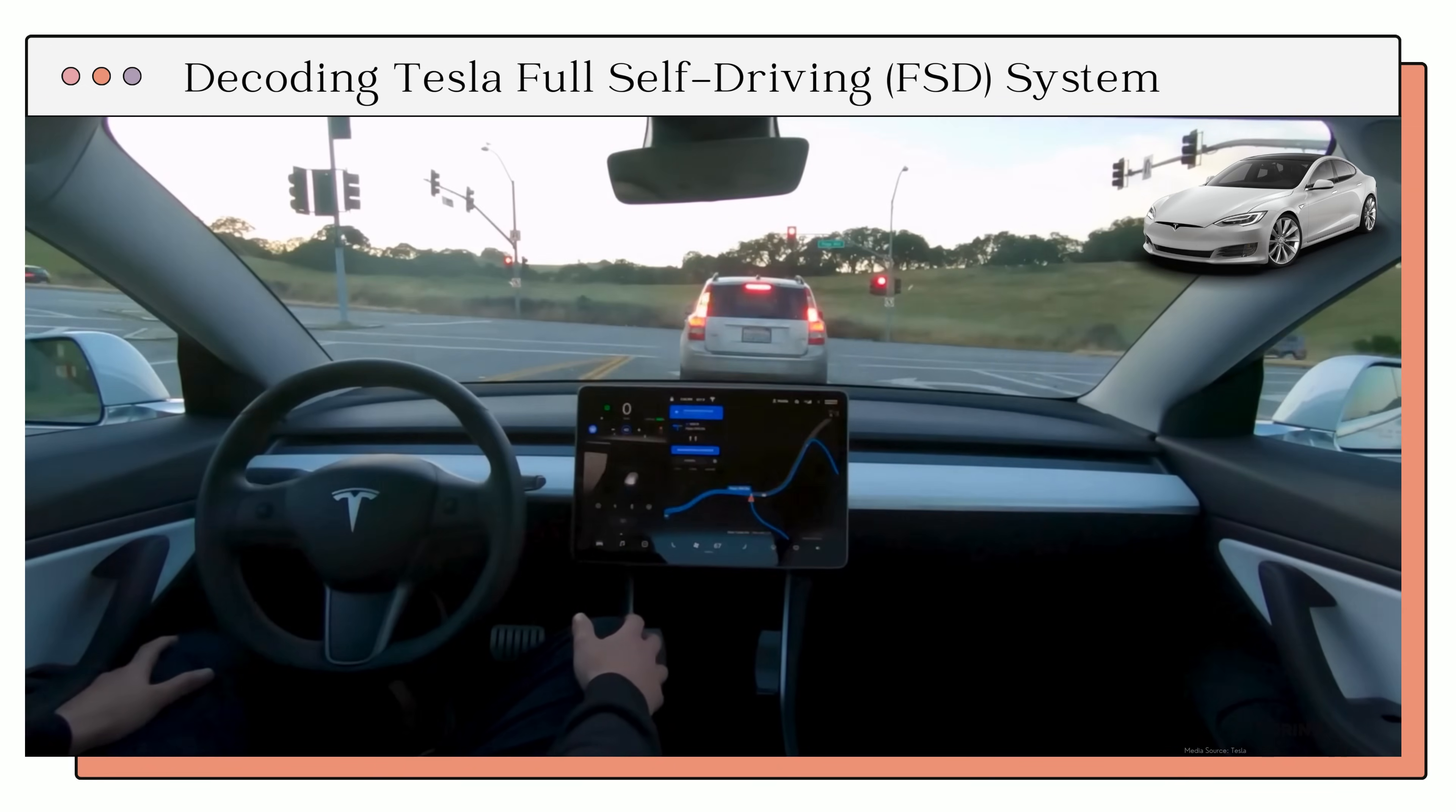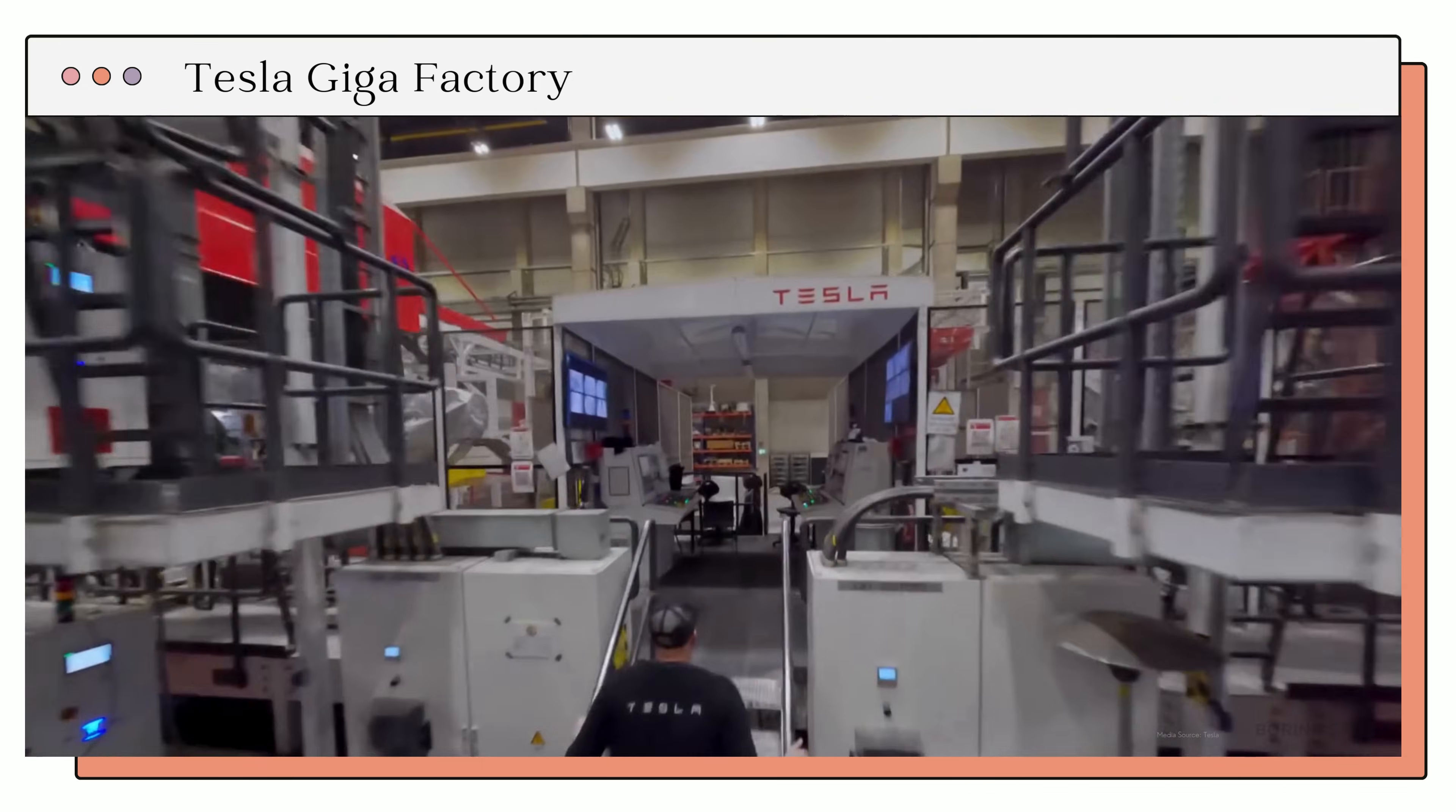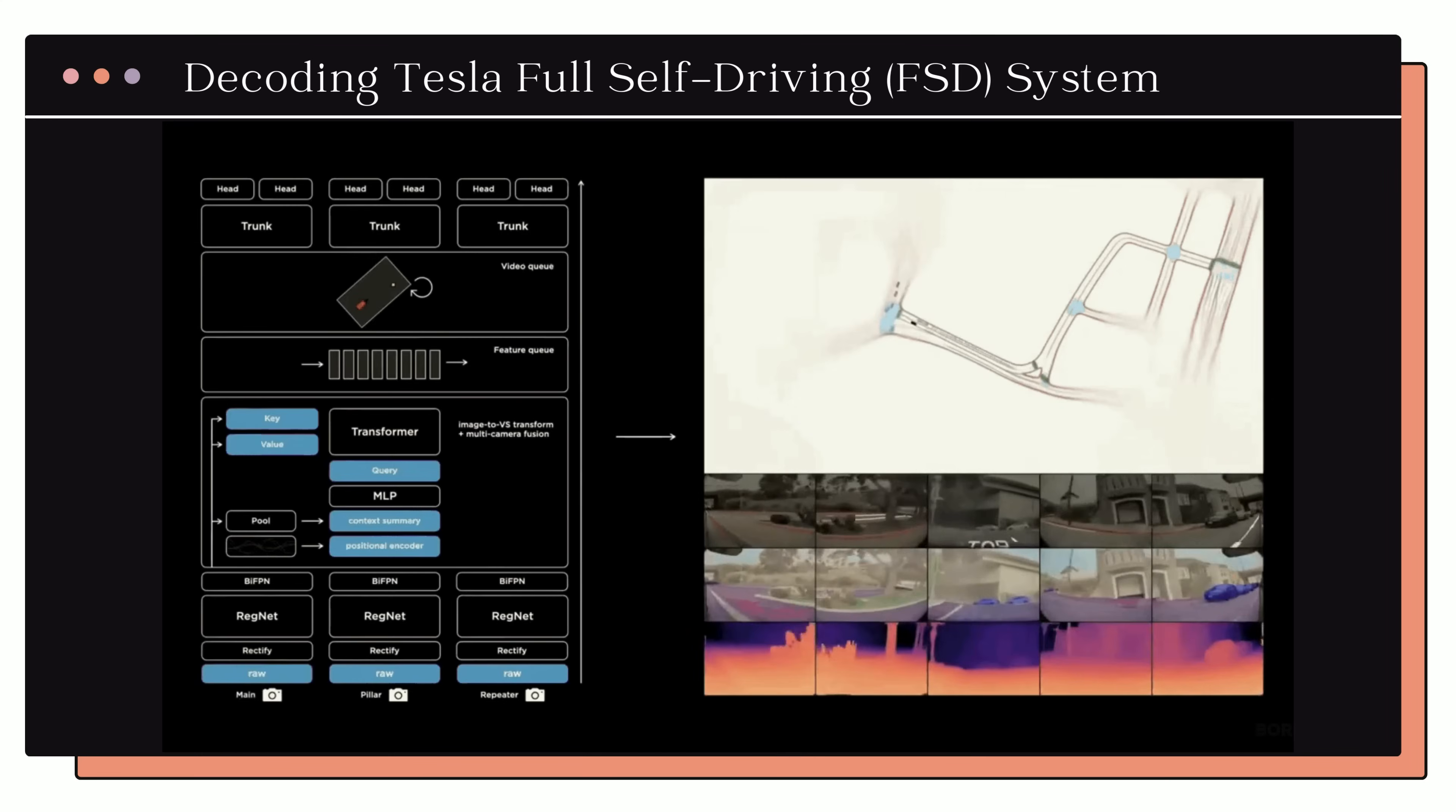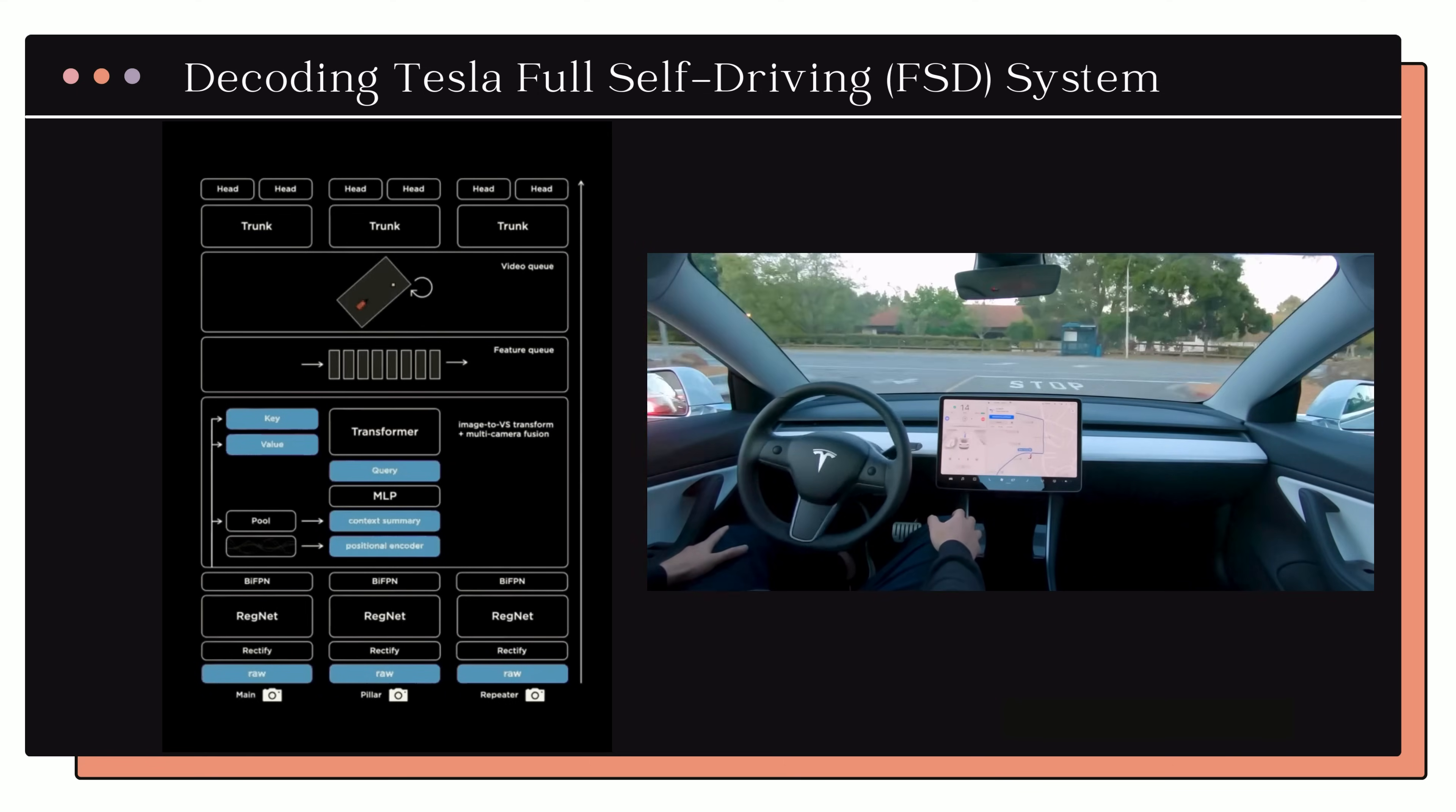From its relentless push for fully autonomous driving to the massive gigafactories churning out cars at unprecedented scale, Tesla has always been about audacity. But what really sets it apart? It's the brain behind it all - the self-driving system architecture. Today we're going to crack that open and explore how this has put Tesla light years ahead of its competitors.